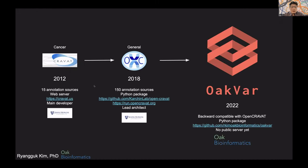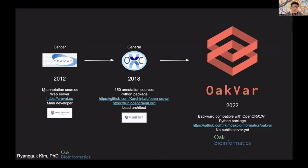The history of Open CRAVAT and Oak Far started in 2012. I was the main developer of the CRAVAT web server — it was a Johns Hopkins project. At that time, it was just a web server with about 15 annotation sources, such as ClinVar and COSMIC, and it was for cancer variants only.